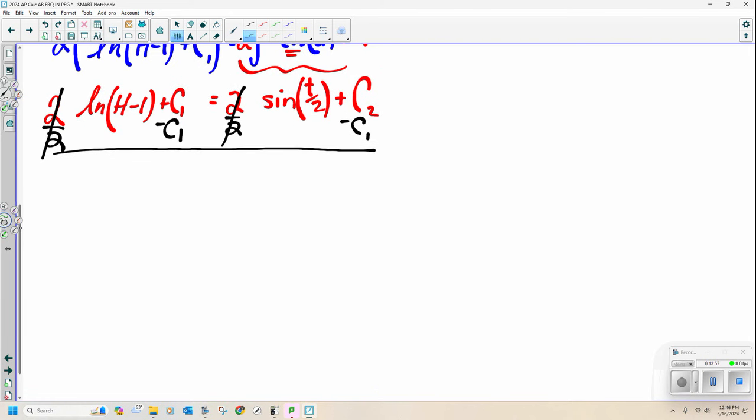Extendu. Here we go. So I've got the ln of h minus 1 equals the sine of t over 2. When I combine two constants, it just gives me some third constant. All right? This really isn't going to be bad at all. And what do I mean?